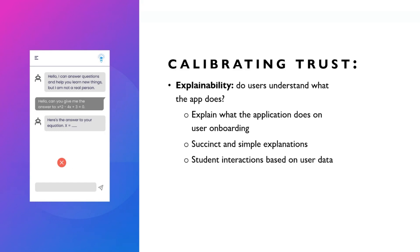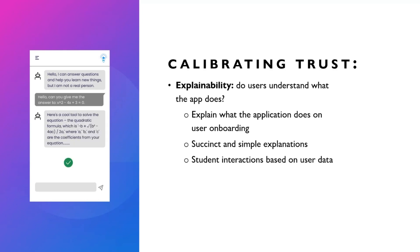Explainability also covers how you interact with users depending on their role. For example, if a student asks for the answer to a math problem, the AI should not just give the answer. Instead it should act as a tutor — for example, responding with 'There's a cool tool you can use to solve the equation, which is the quadratic formula, and here's how it works.' That makes it a tutor rather than just an answering machine.